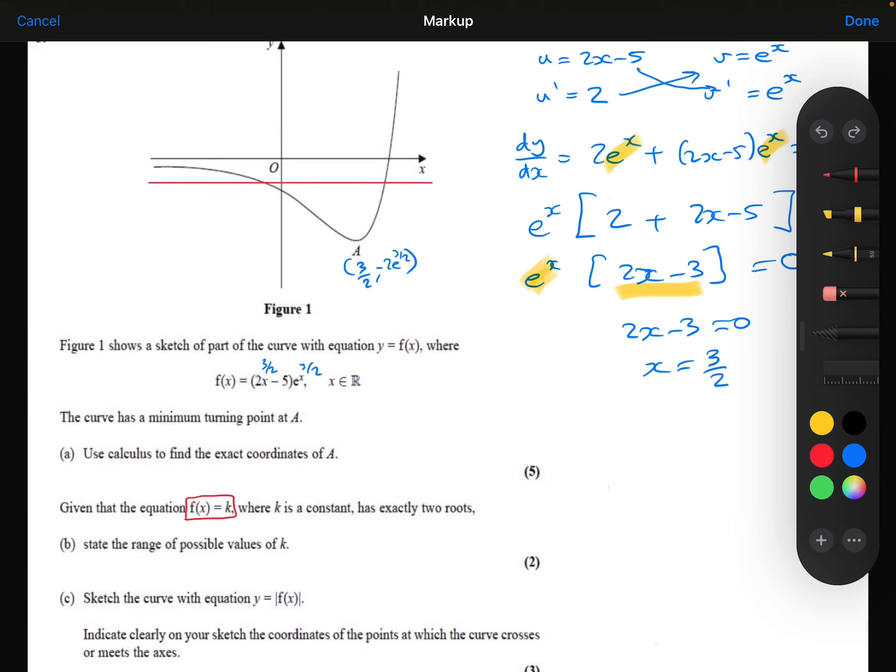Well, it could be here, for example. That's going to intersect twice here and here. Or it could be here, or here, or here, or here. Any of these values here, it can't be 0, because it looks to me like this is an asymptote here, where it's getting closer and closer to 0, but never actually touching.